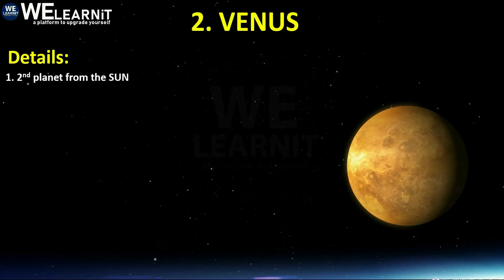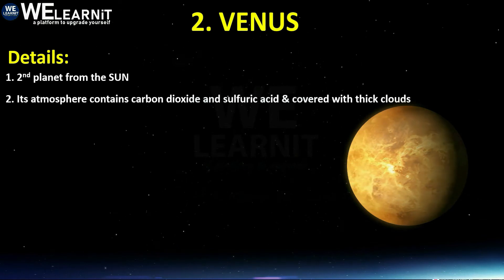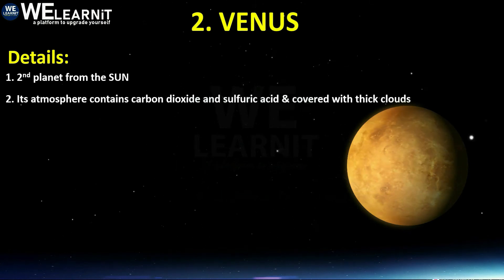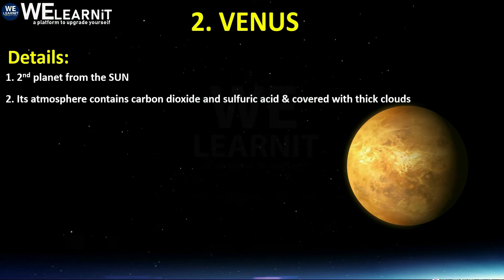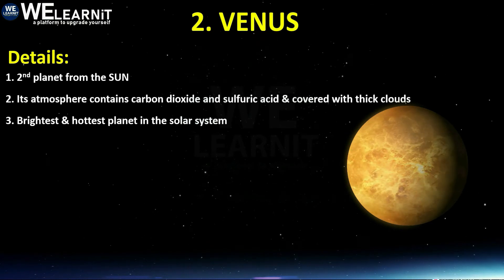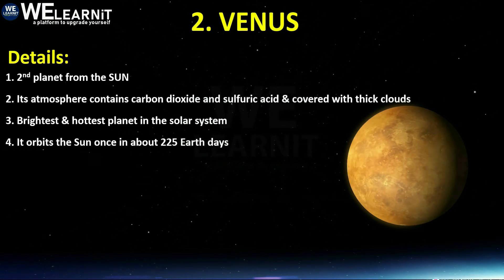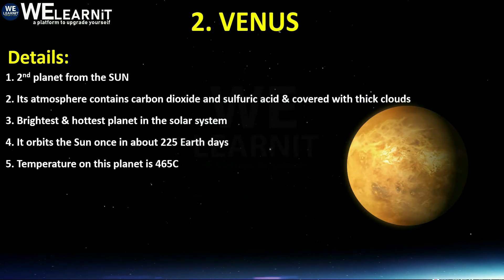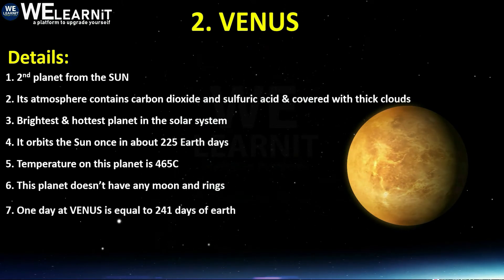The second planet is Venus. Venus is the second planet from the Sun. Its atmosphere contains carbon dioxide and sulfuric acid, and it is covered with thick clouds. It is the brightest and hottest planet in the solar system. It orbits the Sun once in about 225 Earth days, and the temperature of this planet is 465 degrees Celsius.